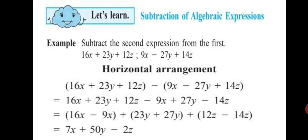Here you can see one example. The question is: subtract the second expression from the first. You can see two expressions are given — the first one is 16x plus 23y plus 12z, and the other expression is 9x minus 27y plus 14z. Altogether you can solve this sum by two methods: one is horizontal arrangement and the second one is vertical arrangement.